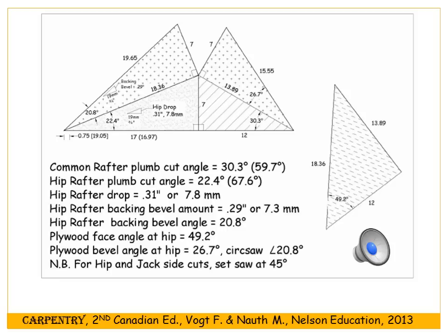On the far right is a triangle giving the angle for the sheathing. The base is 12 inches and the right side rises by 13.89, the unit common rafter. The hypotenuse is still 18.36. So you have two ways to get 18.36: put 7 against 16.97, or put 12 against 13.89 — both give you the unit length of the hip rafter.